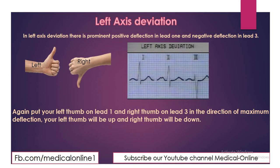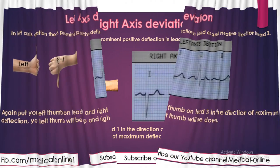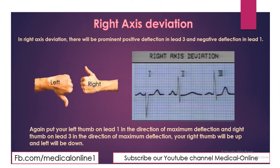In Left Axis Deviation, there is a prominent positive deflection in Lead 1 and a negative deflection in Lead 3. Putting your left thumb on Lead 1 and right thumb on Lead 3 in the direction of prominent deflection, you will find that your left thumb is up and right thumb is down. If the left thumb is up, it means there is Left Axis Deviation.